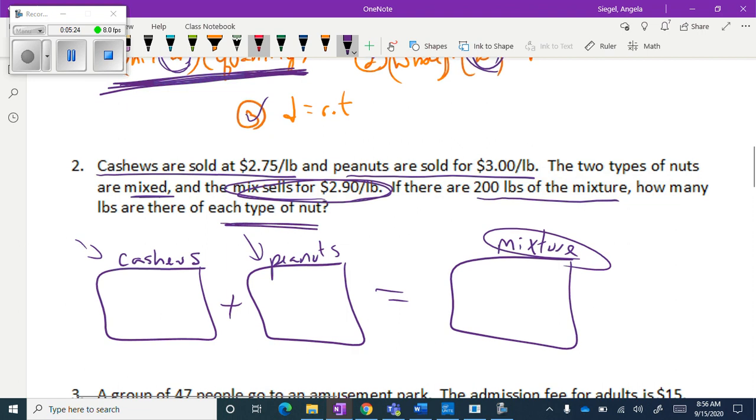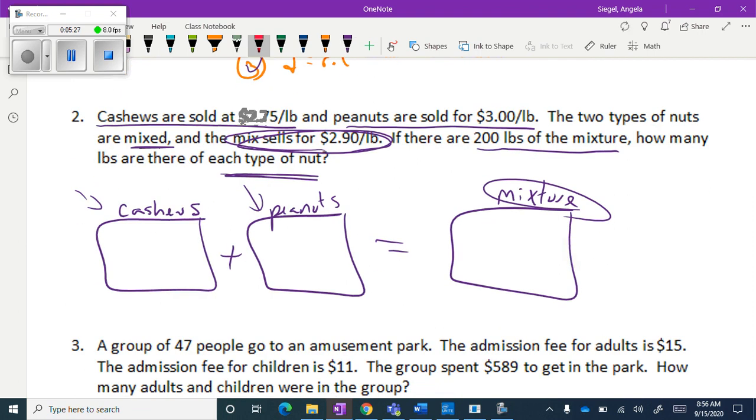It gives us the unit, which is the price of the cashews, which is $2.75. And it gives us the unit, or price, of the peanuts, which is $3 a pound. So this is per pound.